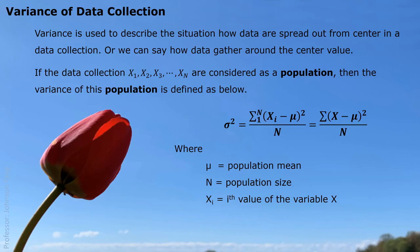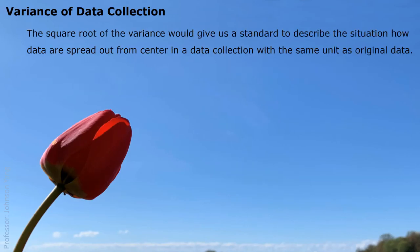Xi represents the i-th value of the variable x for the population. We can either use sigma with the indication from 1 to capital N, or we just simply use sigma, which means sum — add all the possible values together. So we calculate all the squares for every possible value to the center value.